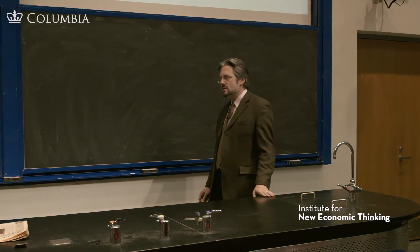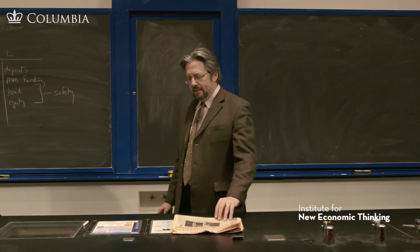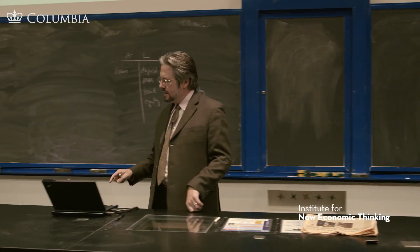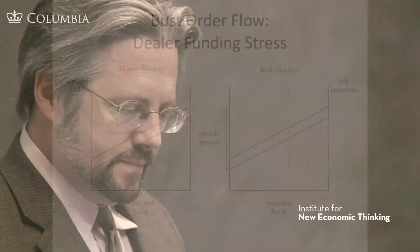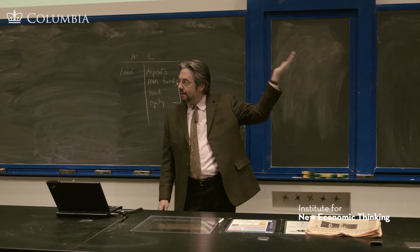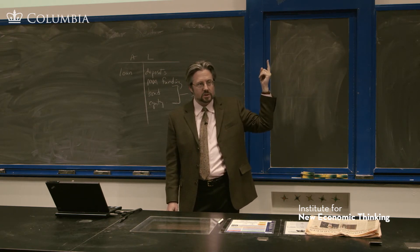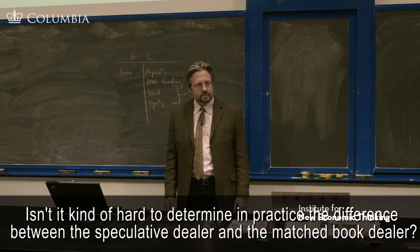How do you keep dealers from relying on the Fed? The main thing is remembering this diagram — this is falling back on the Fed, the excess exposure — and you want to keep this from happening. The way you keep it from happening is by making sure the speculative dealers have adequate capital, so they're not going to be shifting in their financing abilities. That's what caused this problem. Is it hard to determine in practice the difference between a speculative dealer and a matched book dealer?